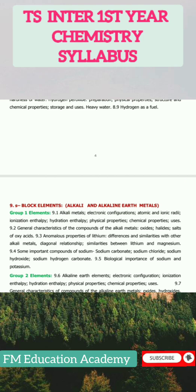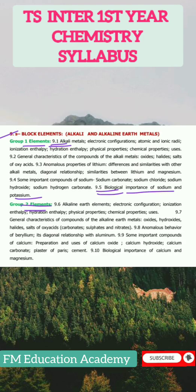The ninth chapter covers Group 1 and Group 2 Elements. For Group 1, topics run from subtopic 9.1 to 9.5, including biological importance of sodium and potassium. For Group 2 Elements, from 9.6 Alkaline Earth Elements to biological importance of calcium and magnesium at 9.10.